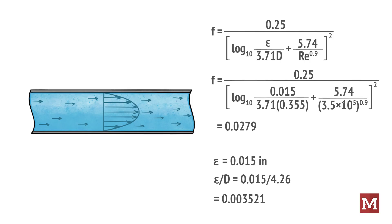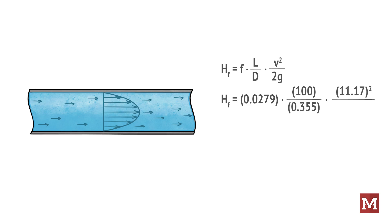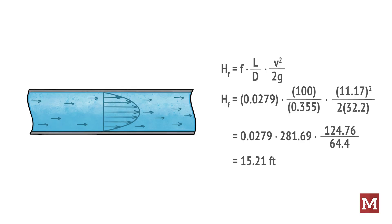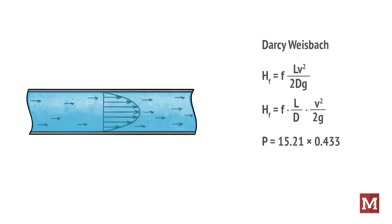Now we can calculate the pressure loss in terms of feet of head by plugging all that in. So H sub f is going to equal 0.0279 times the ratio of the length 100 feet divided by the inner diameter 0.355 times the velocity 11.17 squared divided by twice the gravitational constant. From that we get an answer of 15.21 feet of head. So to make the comparison with what we arrived at with the Hazen-Williams equation let's convert that to PSIG. And the easiest way to do that is simply multiply by 0.433 which gives us 6.59 PSIG.